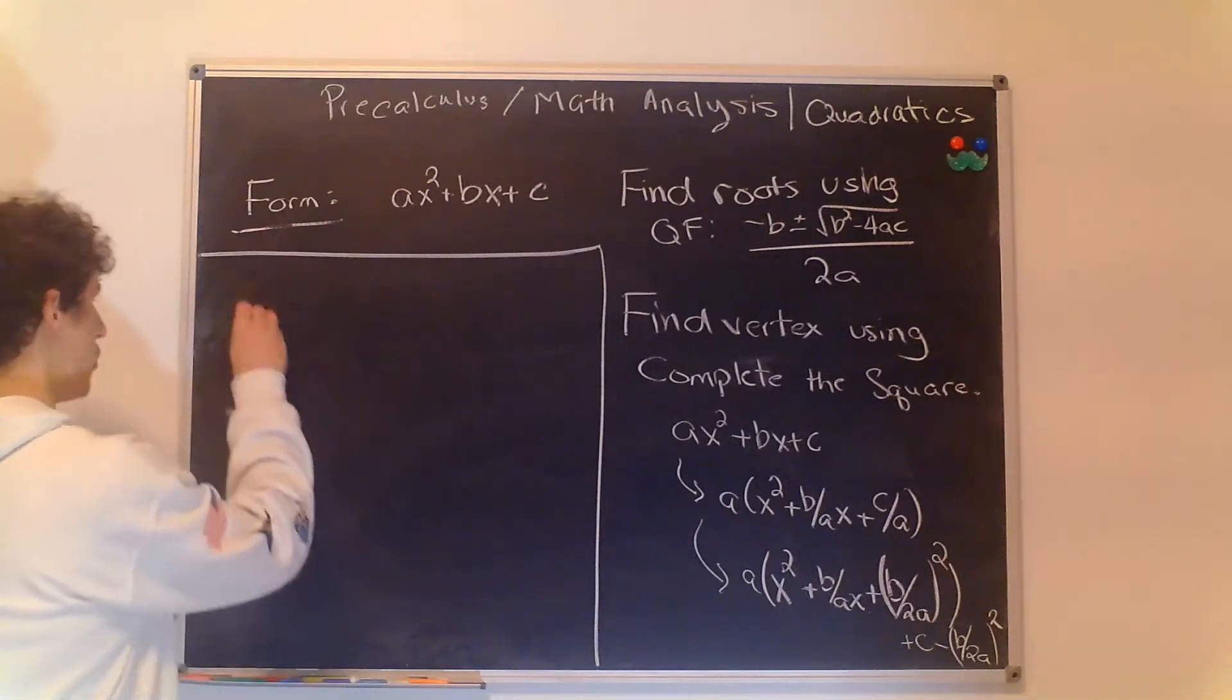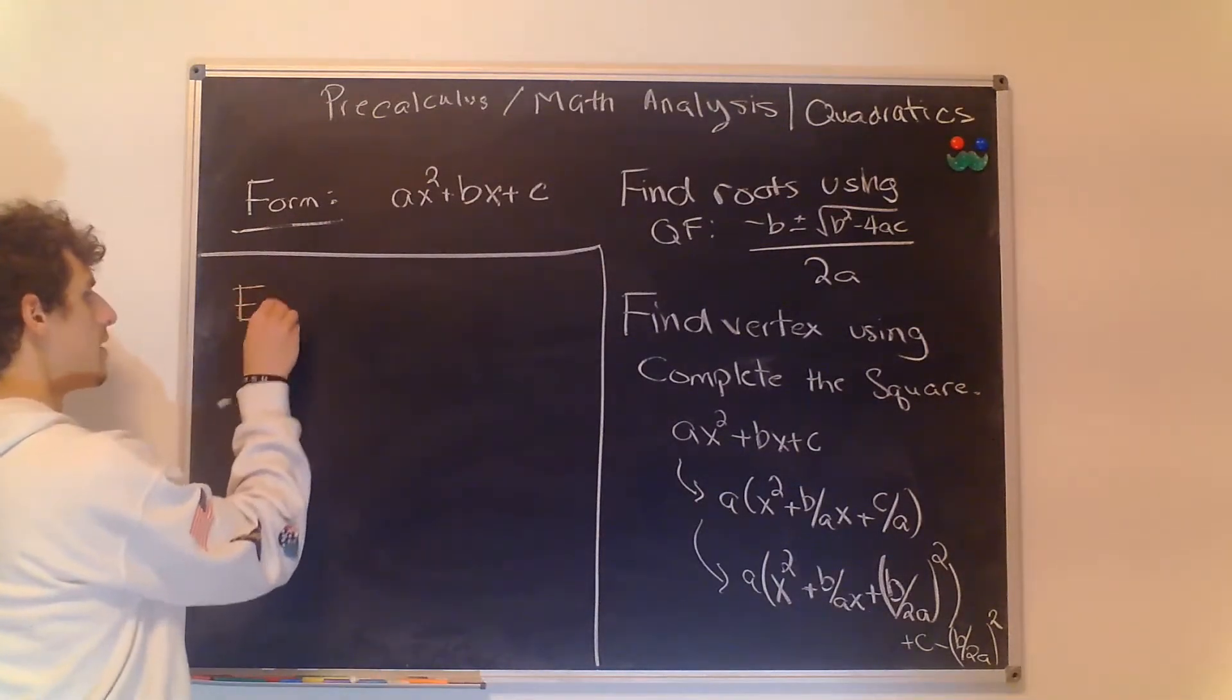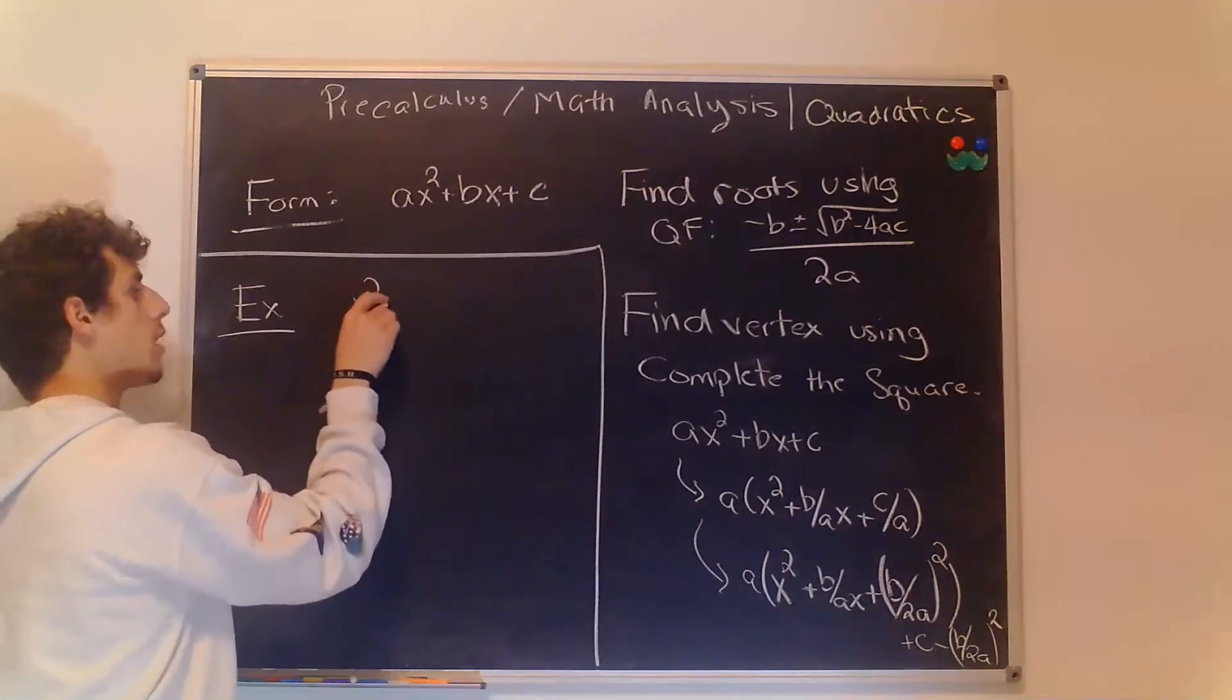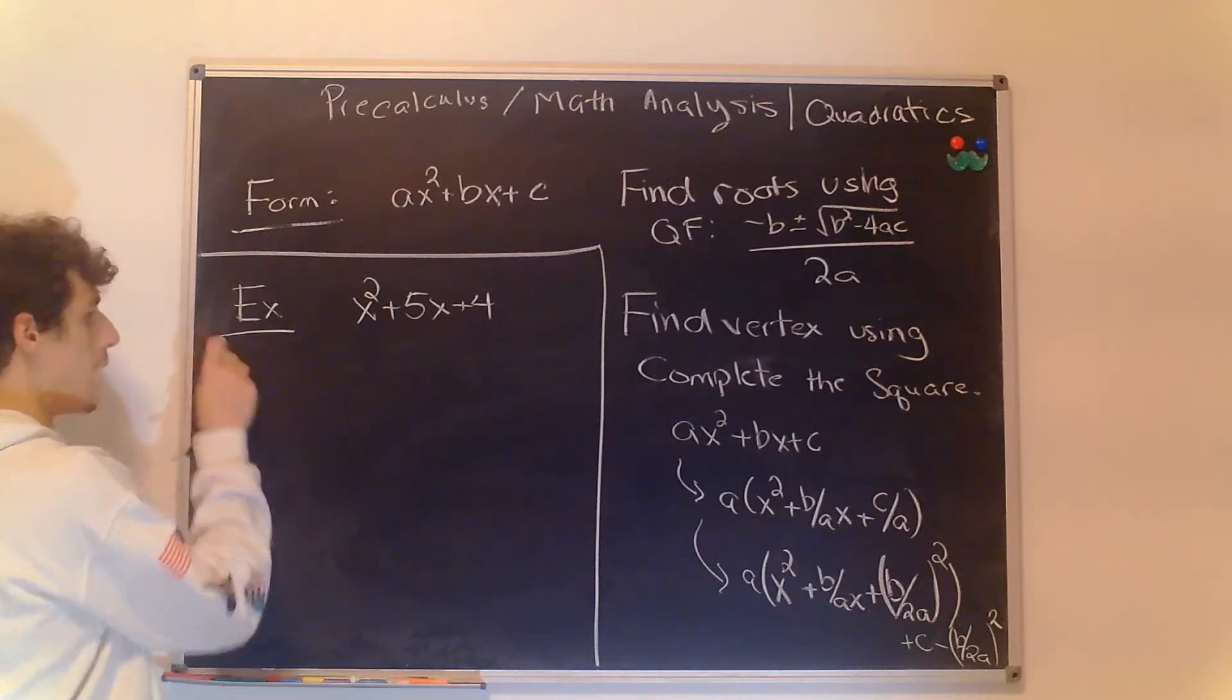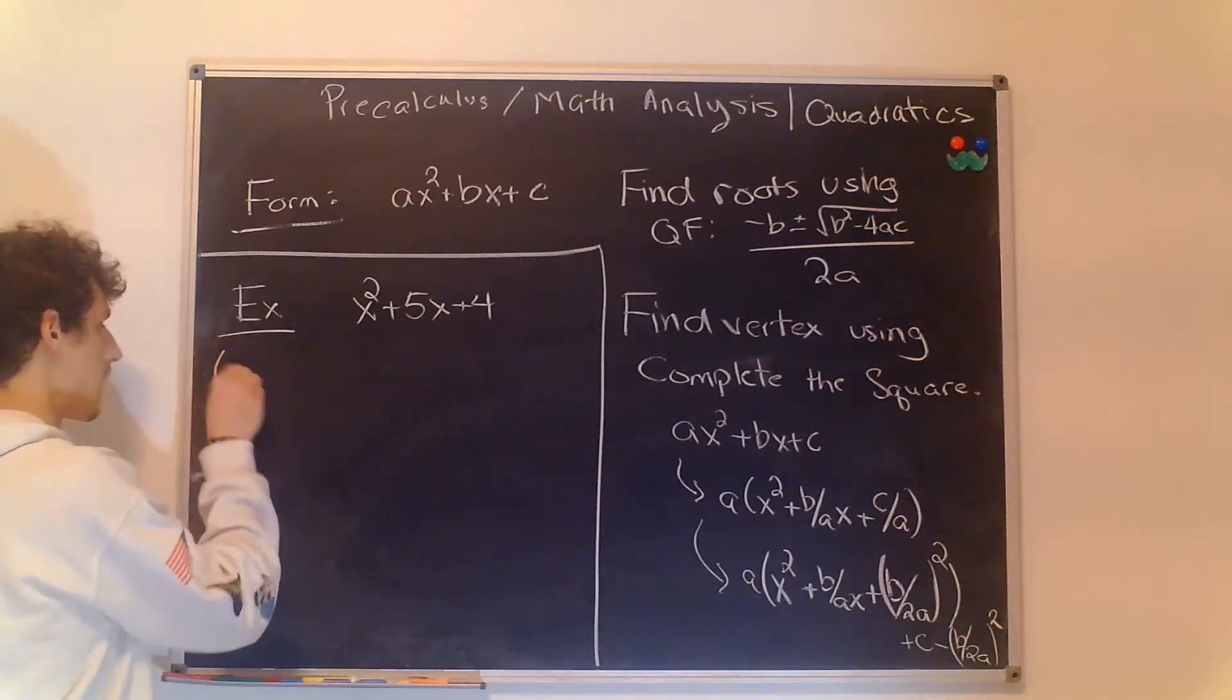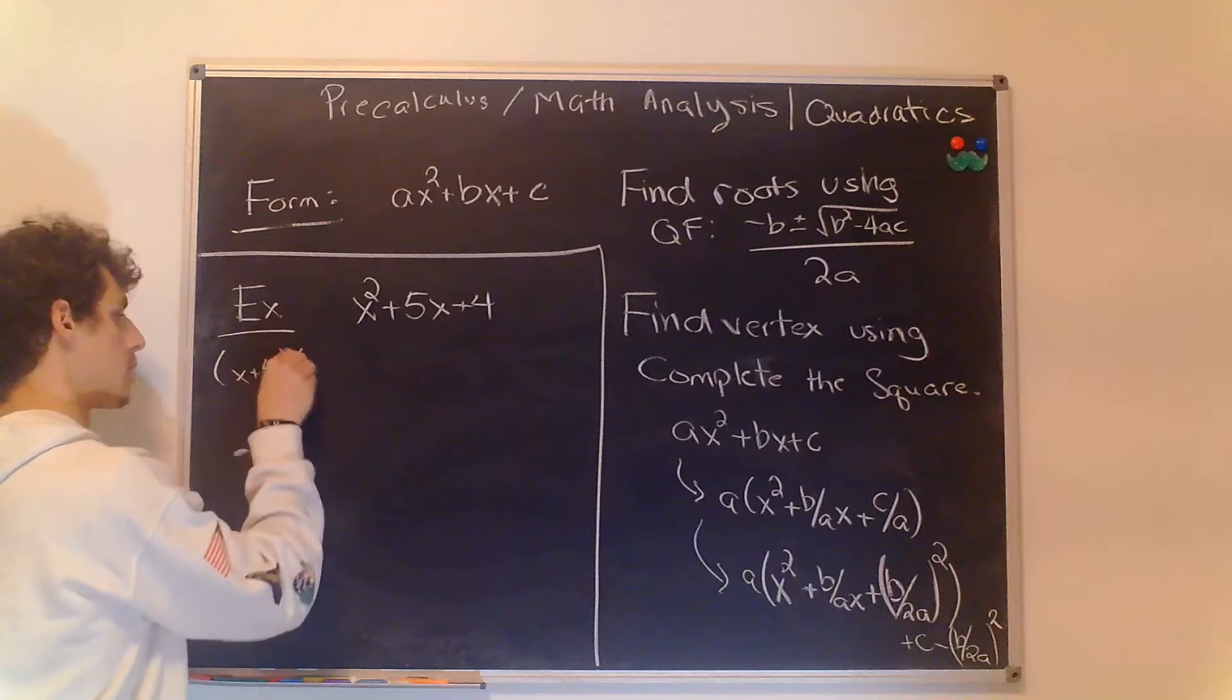So let's take as an example the polynomial x² + 5x + 4. We know the zeros of that because it's easily factored into (x + 4)(x + 1) giving us zeros of -4 and -1.